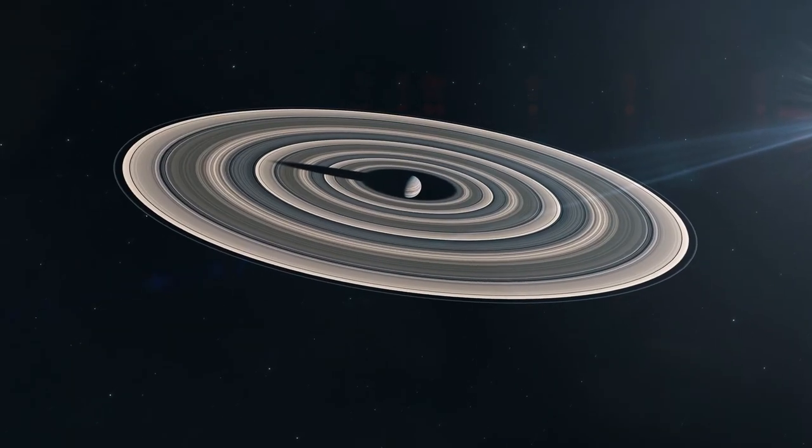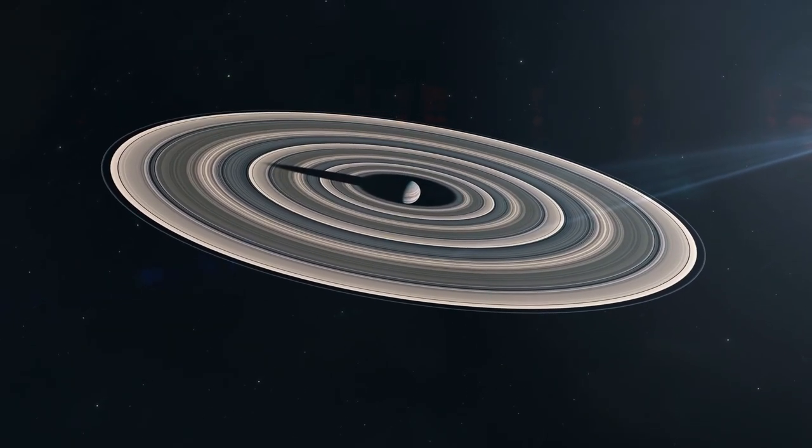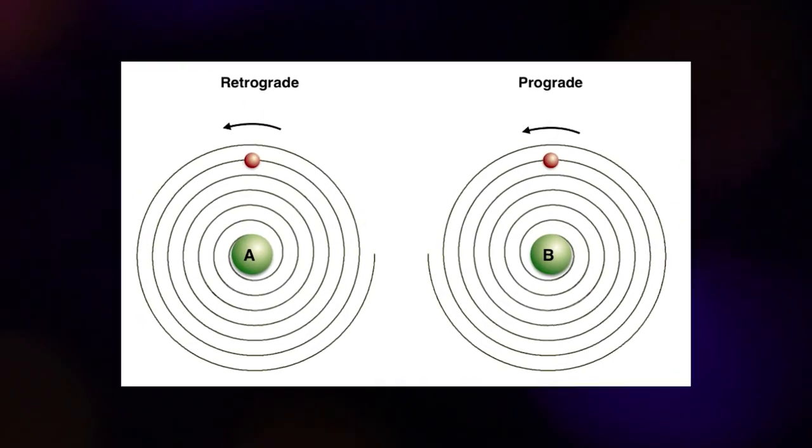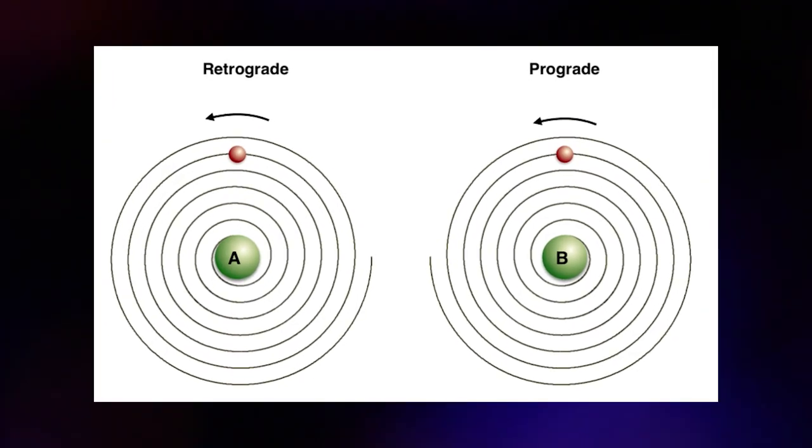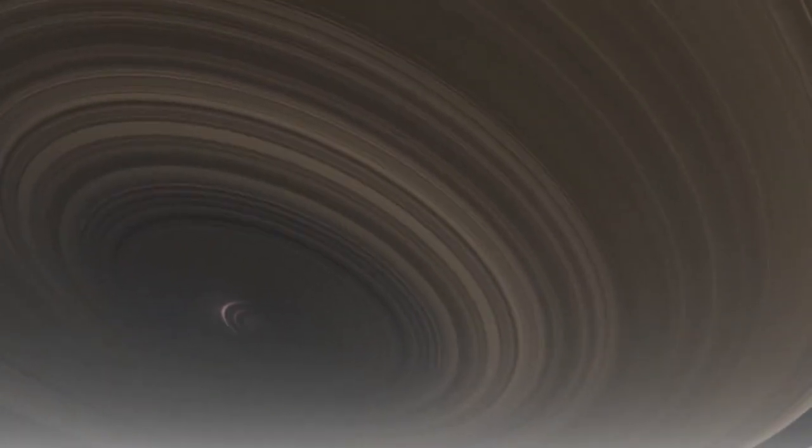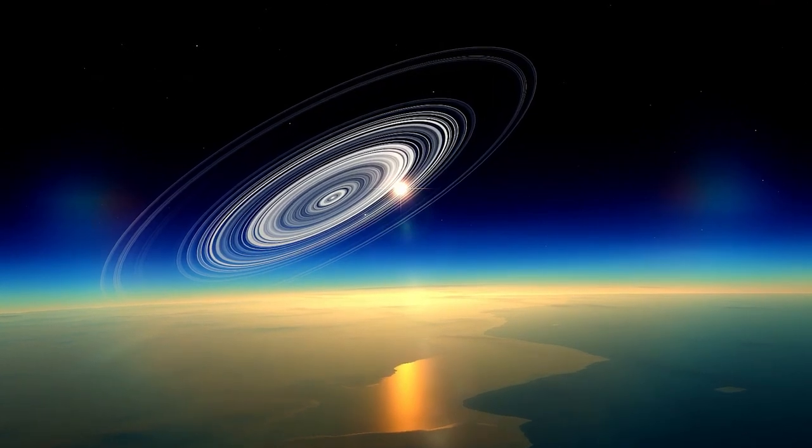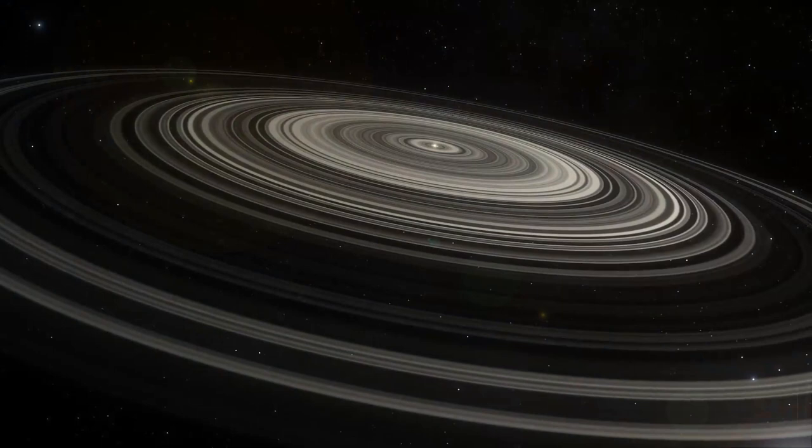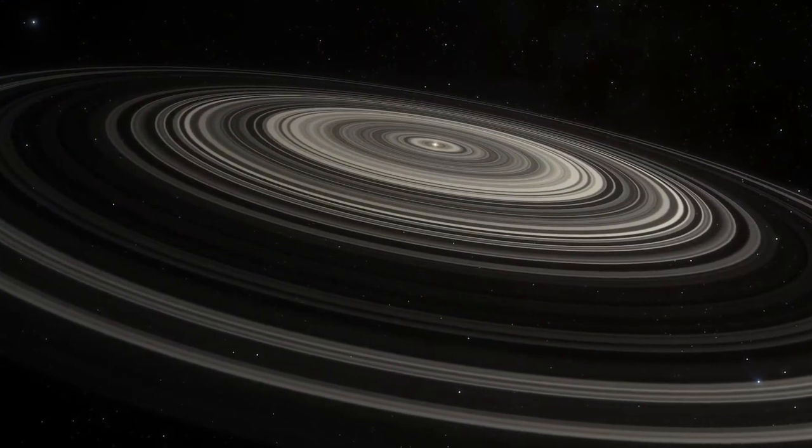Computer models were used to simulate the many ways that Super Saturn's rings could orbit the planet, including prograde, rotating in the same direction as the planet, and retrograde, rotating in the opposite direction from the planet. Prograde rings were discovered not to withstand a close, powerful gravitational interaction with the host star. The rings were still present, though, in the case of retrograde rotation.